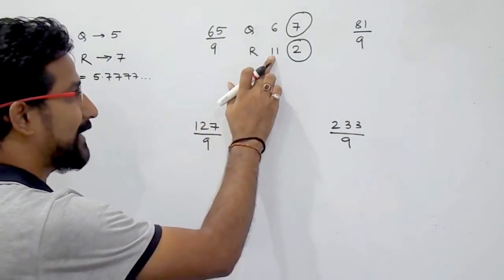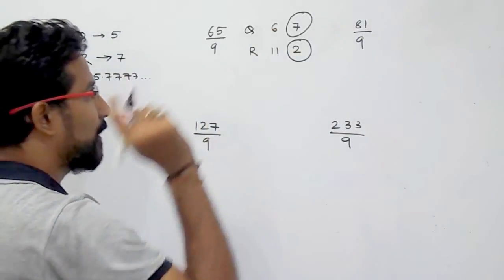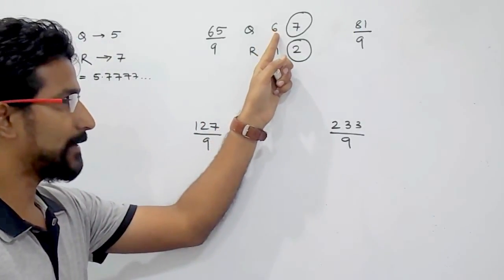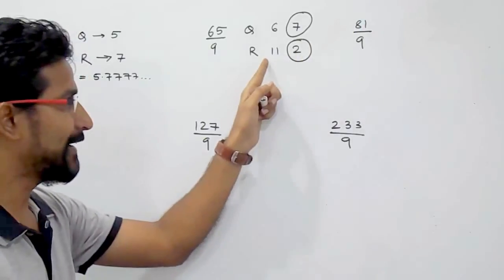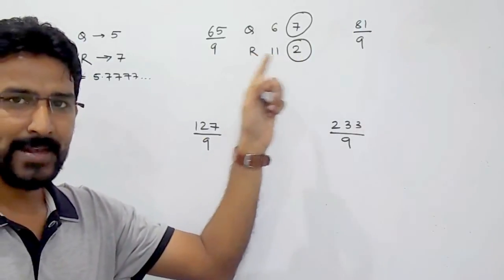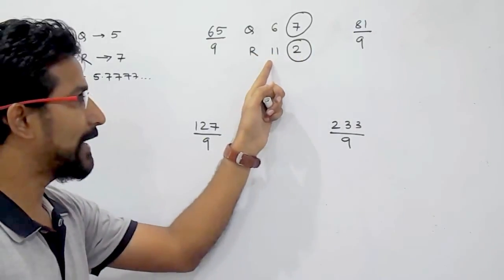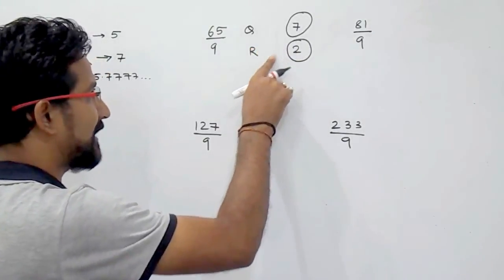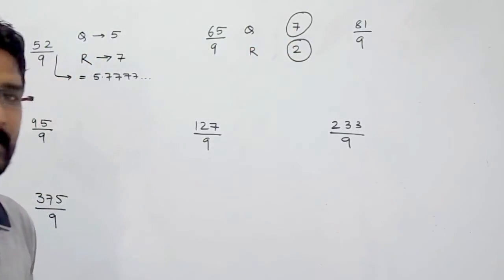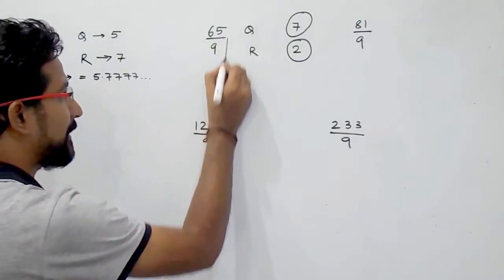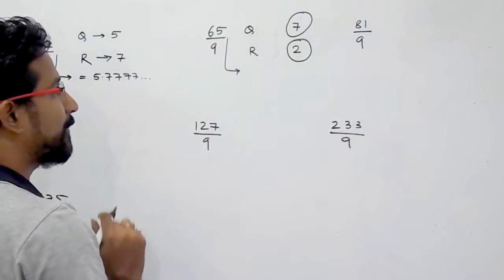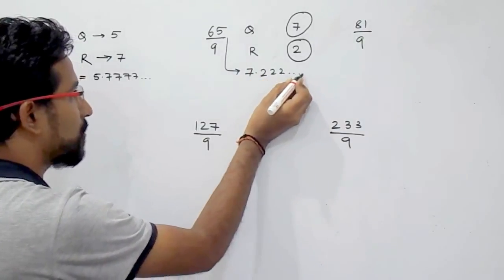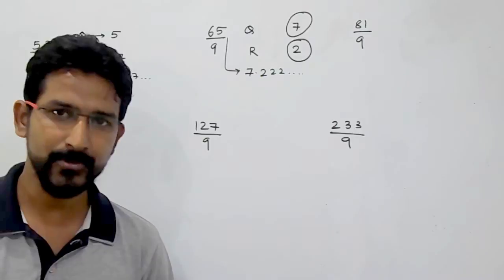So when you get a remainder equal to or greater than 9, what you have to do is increase the quotient by 1 — so it becomes 7 — and subtract 9 from the remainder, so 11 minus 9 is 2. Your quotient is 7 and remainder is 2. So 65 divided by 9 is 7.222 and so on — that is your answer.